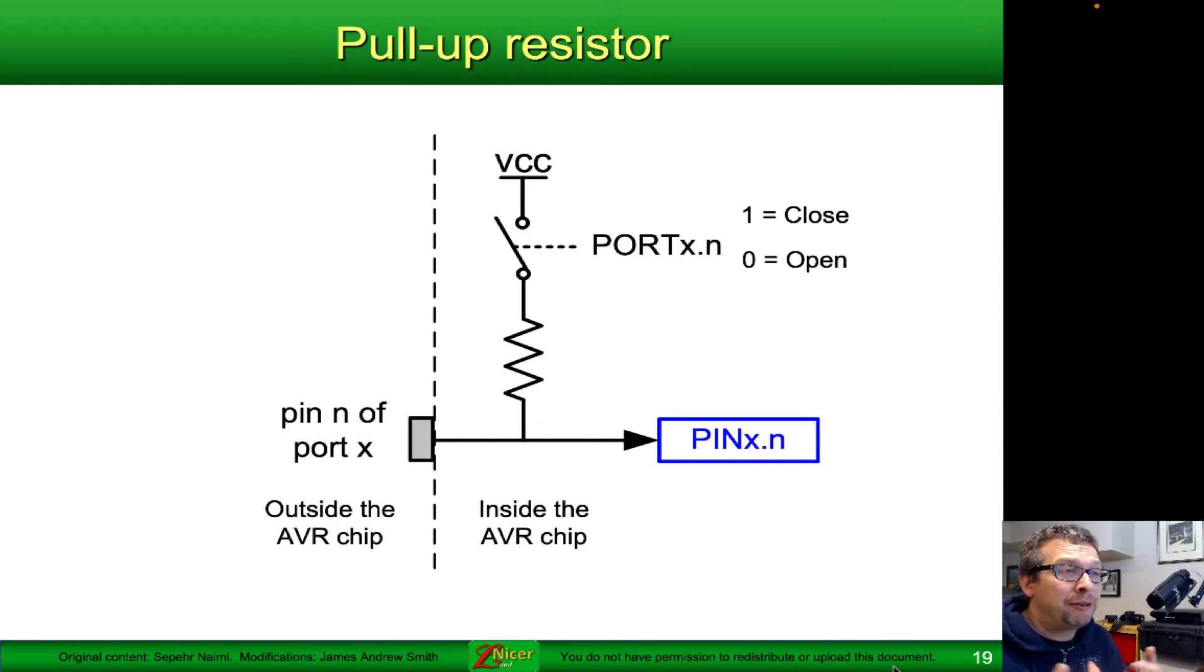If you have a logic zero coming in from the outside world, it will also be a logic zero. When the logic zero comes from outside, you'll get a little bit of current running through that resistor with a small voltage drop, but the overall effect on the logic input signal won't be noticeable.